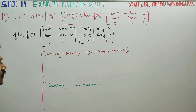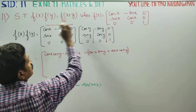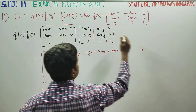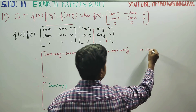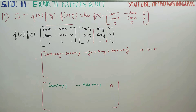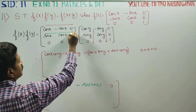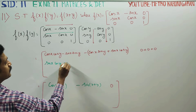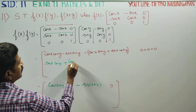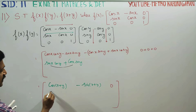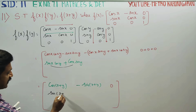The last term in the first row: 0 into cos y is 0, minus sin x into 0 is 0, and 0 into 1 is 0, so the final answer is 0. For the second row first column: sin x·cos y plus cos x·sin y, which is sin a·cos b plus cos a·sin b — the sin(a+b) formula.